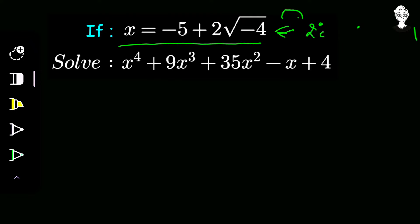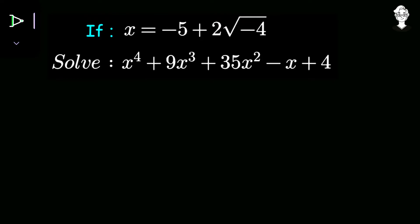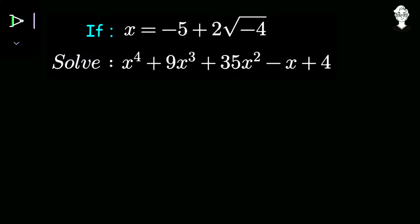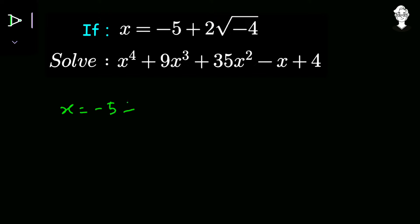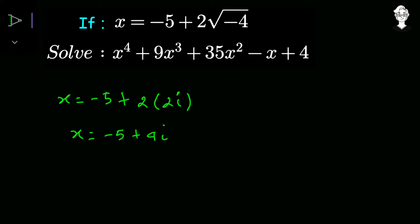So let us look at the solution. If this were a simple question, putting the value of x directly into the equation would work but we want a tricky method to solve it easily. The powers are quite large — 4 and 3 — so taking x to those powers directly would be quite tedious. What we do is rewrite x as negative 5 plus 4 times i. From here we isolate the imaginary number: x plus 5 equals 4i. Now squaring both sides will eliminate the iota.